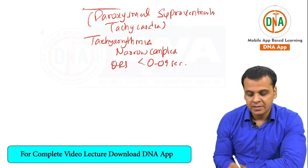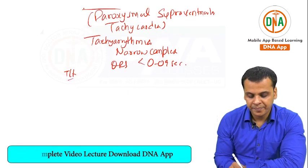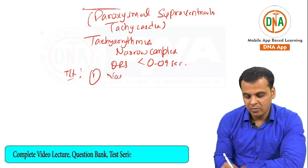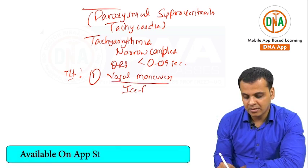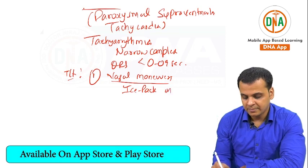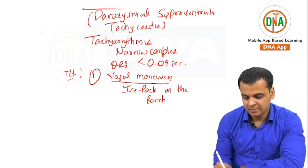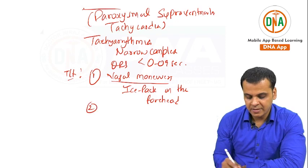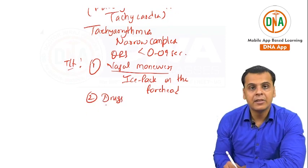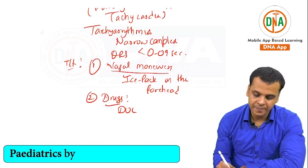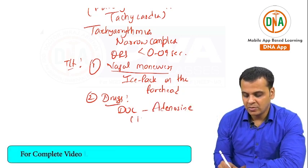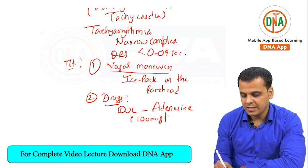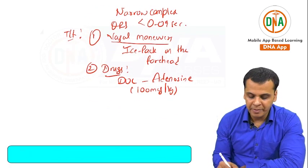For treatment, the first line is vagal maneuvers in the form of placement of an ice pack on the forehead. The second step is drugs, and the drug of choice is adenosine. The adenosine dose is 100 micrograms per kilogram. If there is no response, you can repeat up to a total dose of 500 micrograms per kilogram.